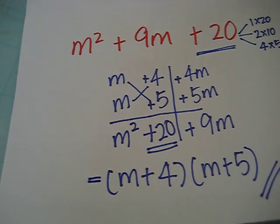To check, we can expand this and we should get back m squared plus 9m plus 20.